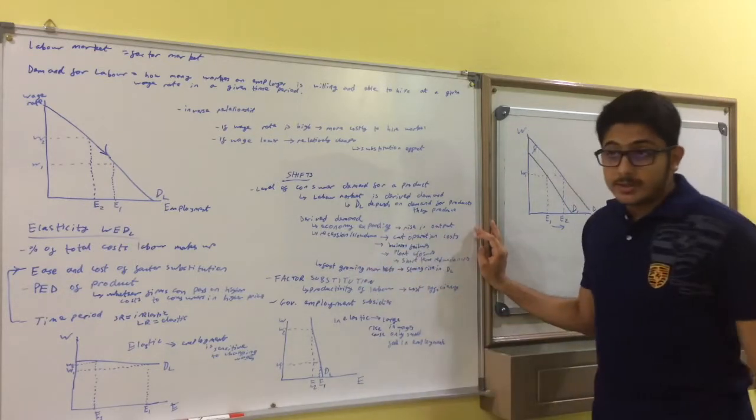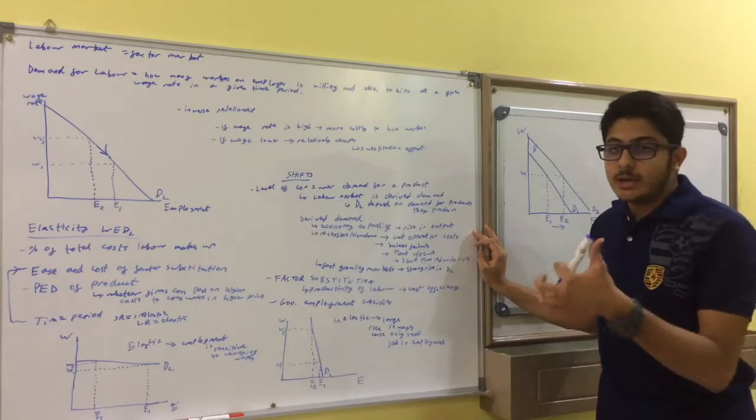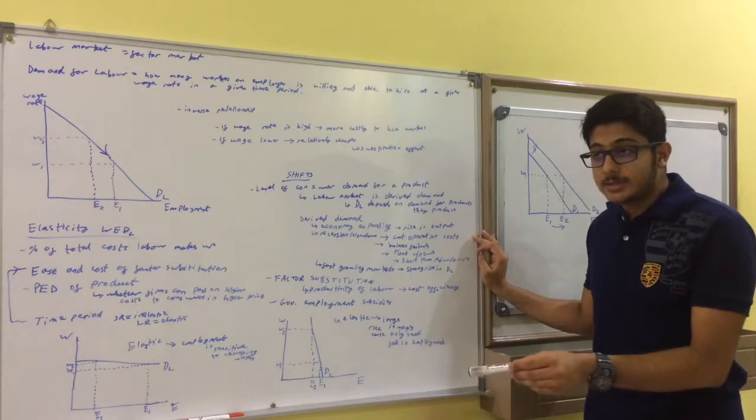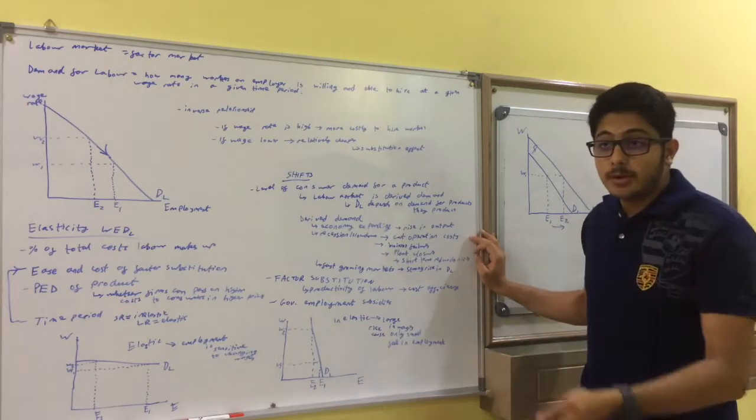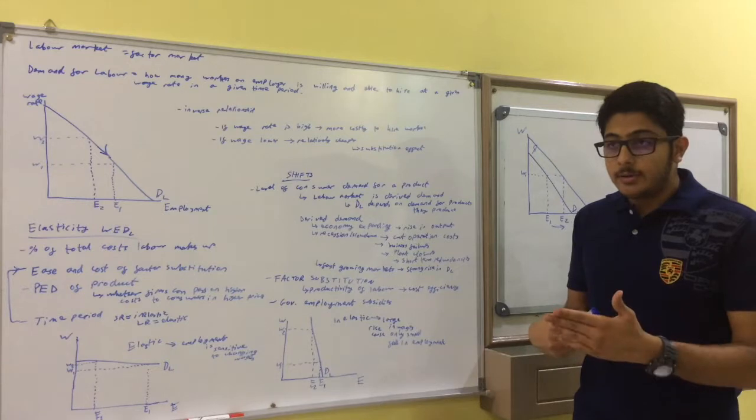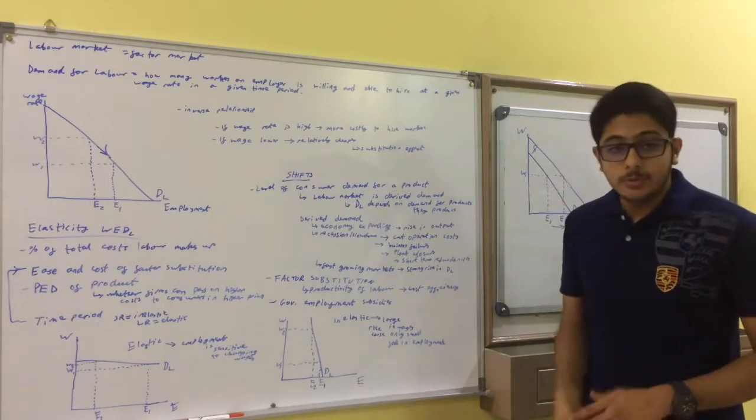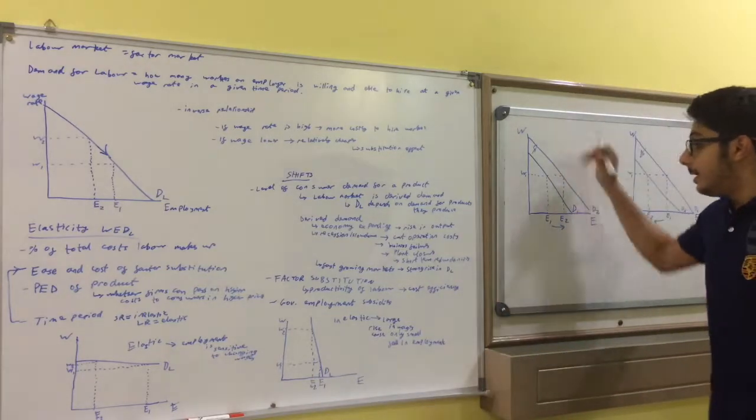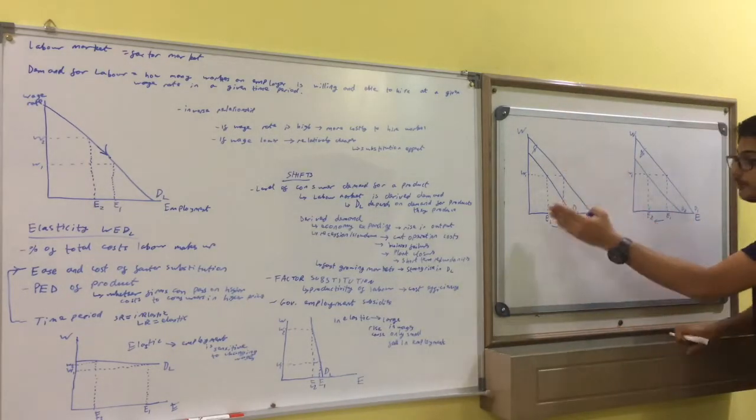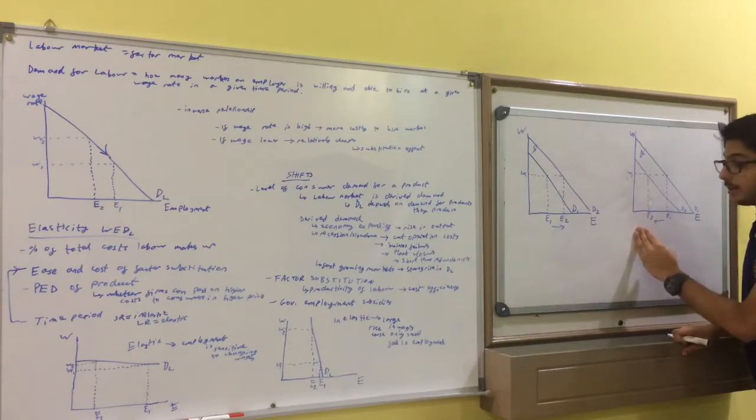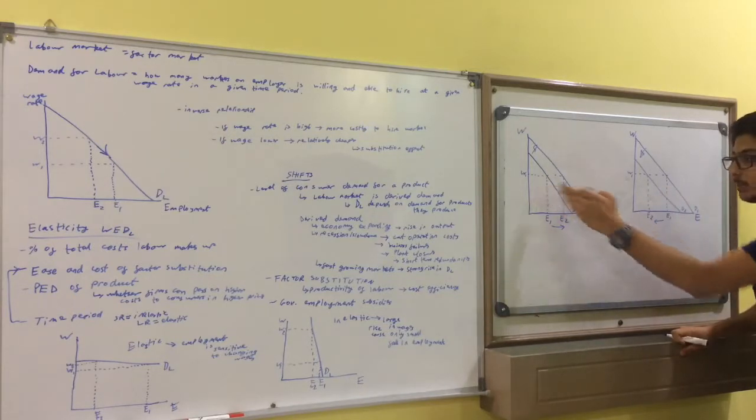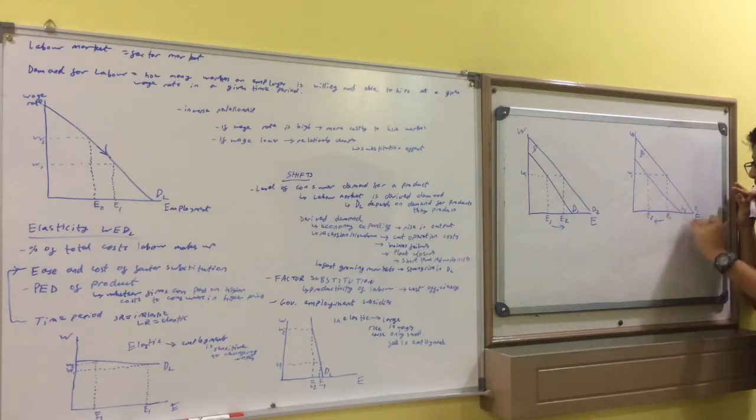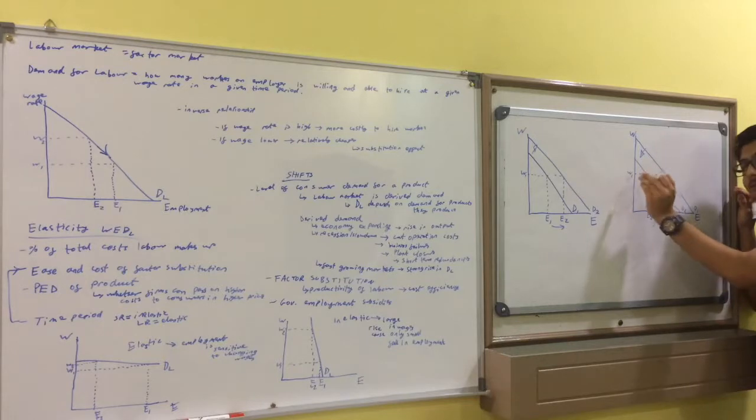In fast-growing markets as well, there will be a strong rise in demand for labor. So, for example, the market for smartphones or tablets, that is a fast-growing market. So, you're going to demand more labor to either produce those phones or tablets or program those phones or tablets. Here we have some diagrams. If the demand for labor shifts to the right, then businesses are going to employ more labor at the same wage rate. The opposite will happen if demand for labor shifts to the left. Businesses are going to demand less labor at the same wage rate.